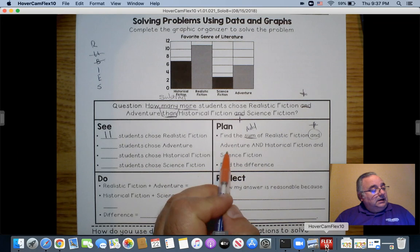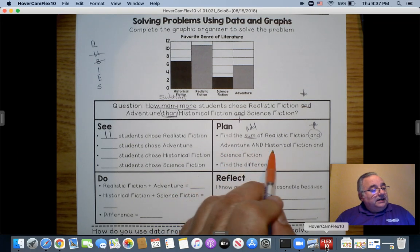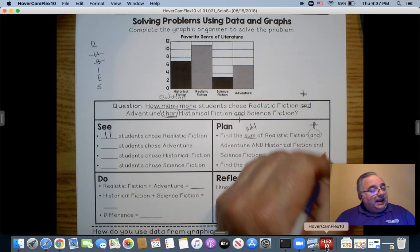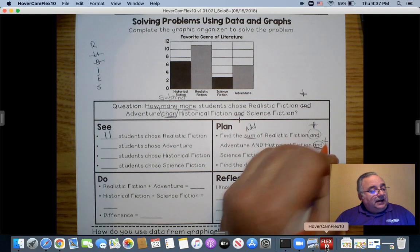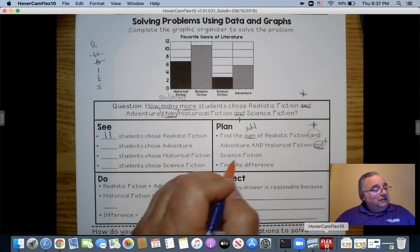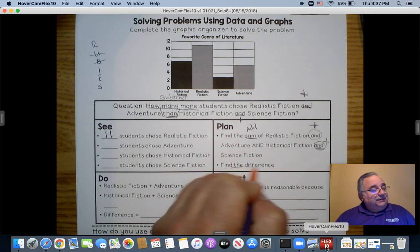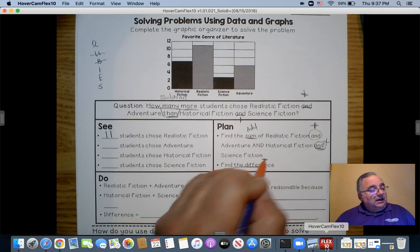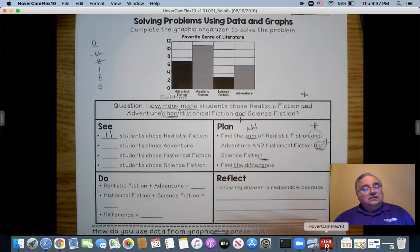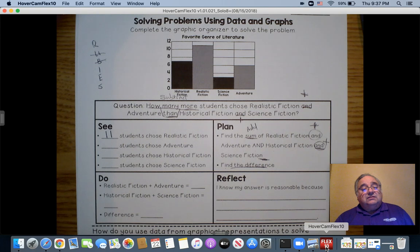All right, adventure and historic fiction, and so I'm underlining here, adding fiction and fiction. Then find the difference, so that lets me know I got to subtract right here. So I got a lot of stuff to do, then it looks like I'm going to do it right here.